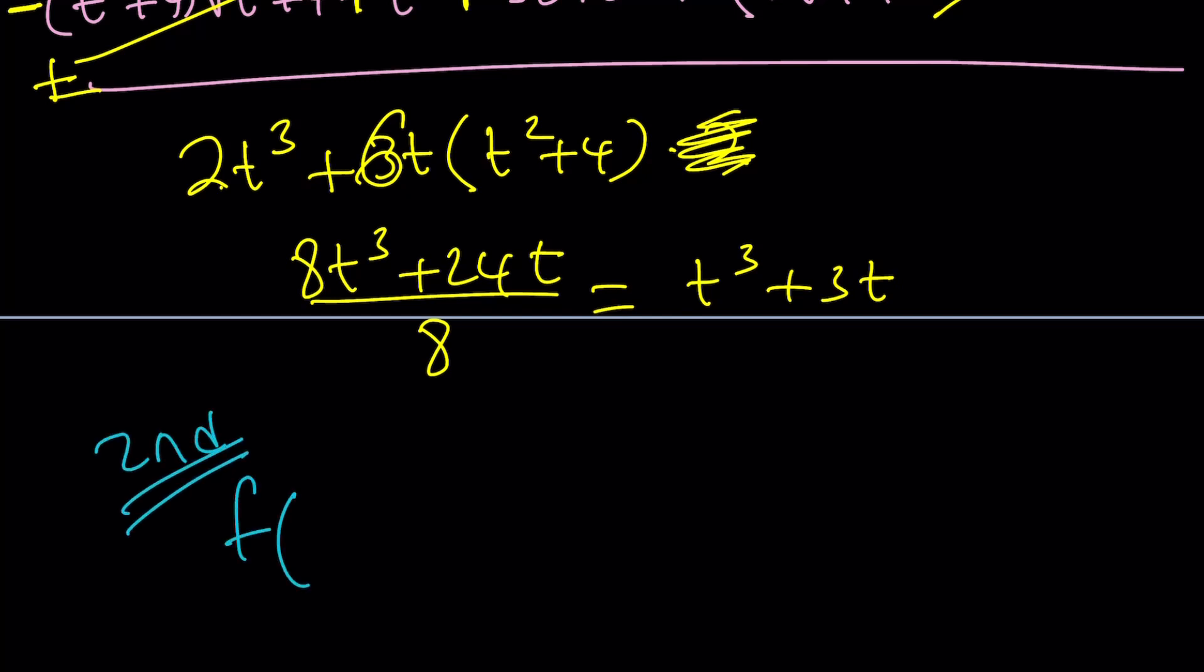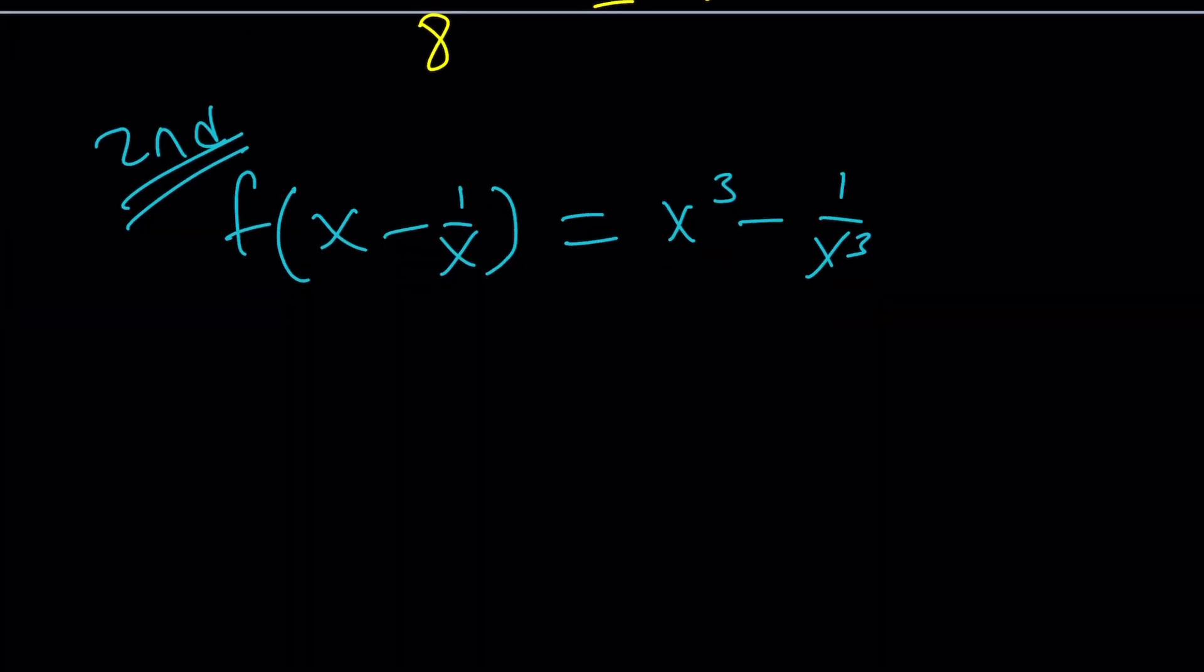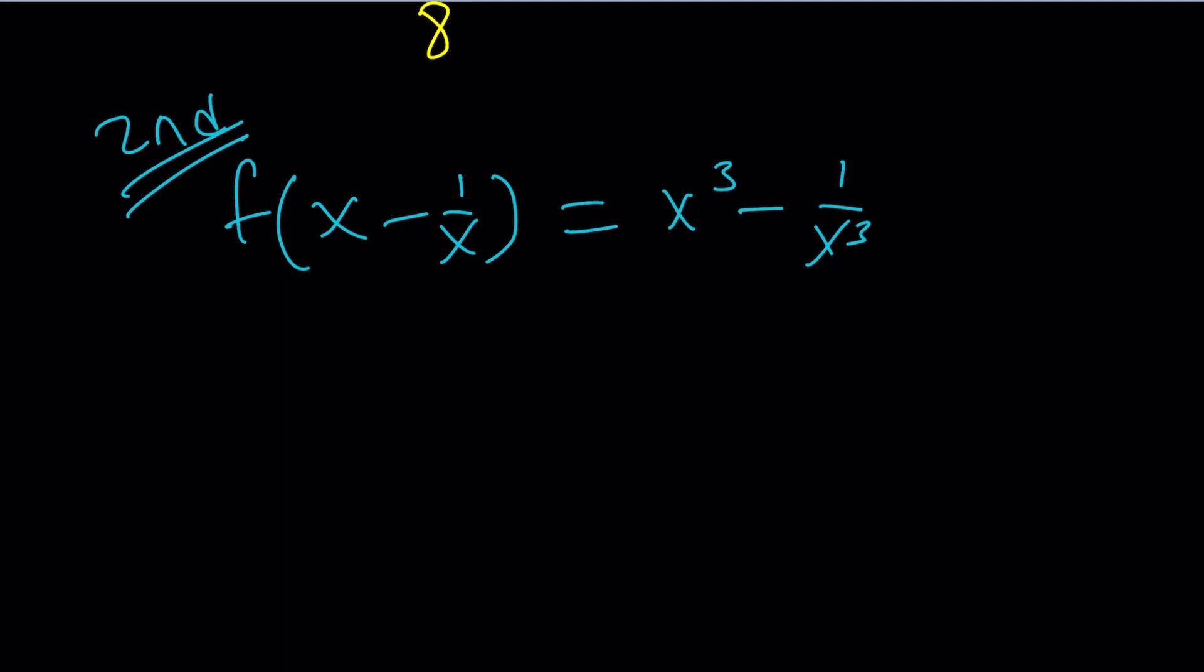Okay. So, f of x minus 1 over x equals x cubed minus 1 over x cubed. So, here's the second method. Actually, the second method is pretty short and it uses an identity. And that identity is the following. If you cube a minus b, you cube a cubed, you get a cubed minus b cubed minus 3ab multiplied by a minus b. So, that's what I'm going to apply here.